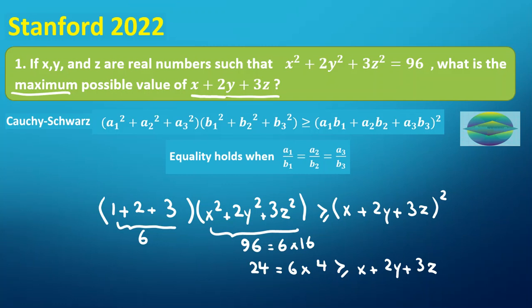Now, we want to prove that this 24 is reachable, is possible. How can we find that? We should find when equality holds: when a₁/b₁ = a₂/b₂ = a₃/b₃. Here, I consider x²/1 = 2y²/2 = 3z²/3. If we cancel, we will see x² = y² = z². If we consider all of them equal to t...